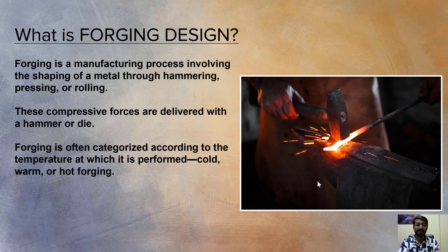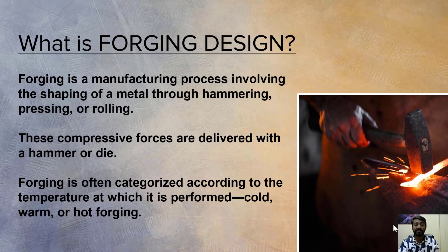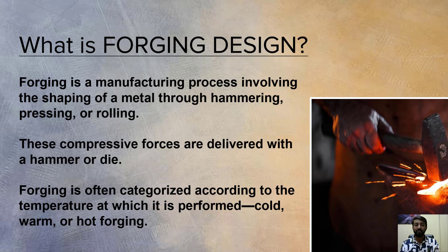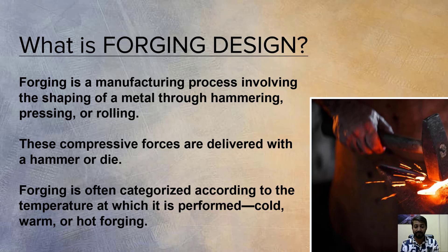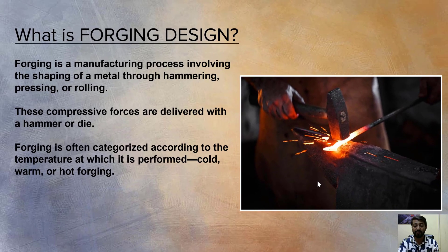The next domain is forging design. Forging is a manufacturing process involving the shaping of metal through hammering, pressing, or rolling. These compressive forces are delivered with a hammer or a die. Forging is often categorized according to the temperature at which it is performed — cold forging, hot forging, or warm forging.